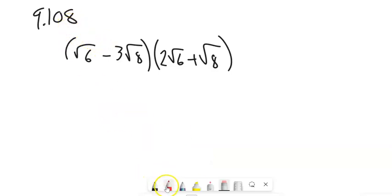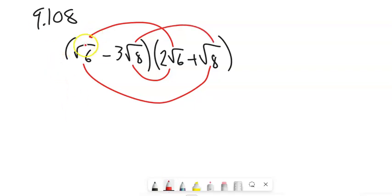So here's the 9.108 problem. If I were doing this, first off, I think you've probably already done things like distribute everything to everything, right? So you're doing all of these multiplications. So let me do these one at a time.